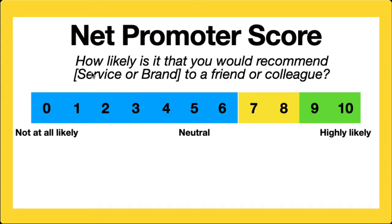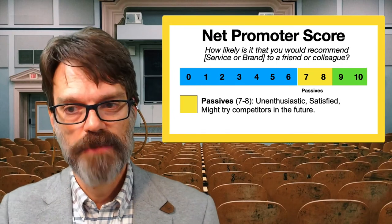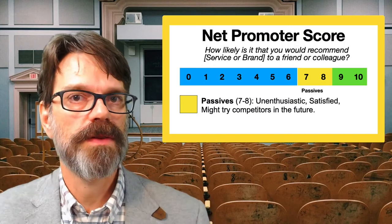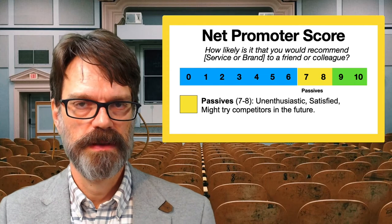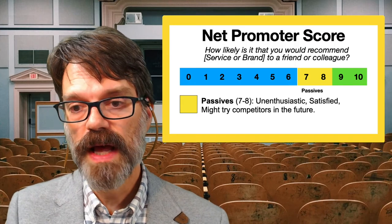Once we look at this data, we divide responses into three distinct groups. The first is passives — folks that score in the seven or eight range. These are generally unenthusiastic, probably satisfied, but they might try competitors in the future. They may enjoy our donuts and have no particular complaints, but they're not overly enthusiastic. They might be likely to try other options down the road.